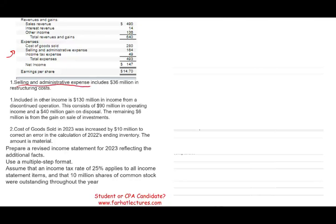First, selling and administrative expenses include $36 million in restructuring costs. We need to report restructuring costs separately — deduct $36 million from selling and administrative expenses and report it on its own line. Restructuring costs occur when a company goes through a reorganization, layoff, or employee re-engineering — redistributing positions, creating new departments, laying off employees. This must be reported separately.